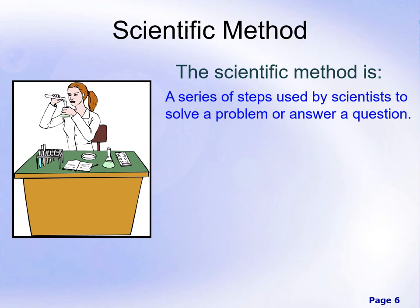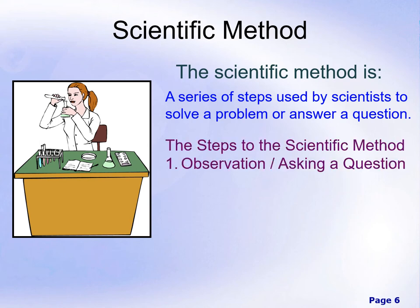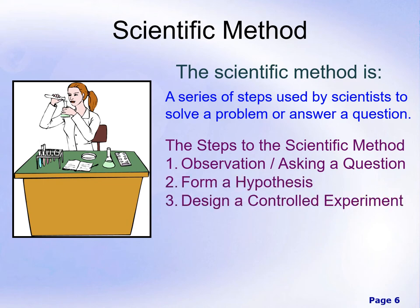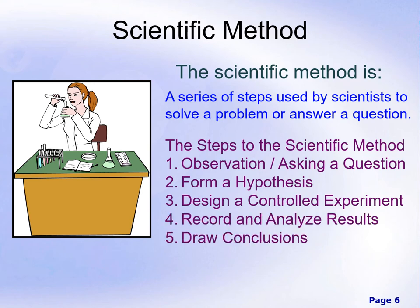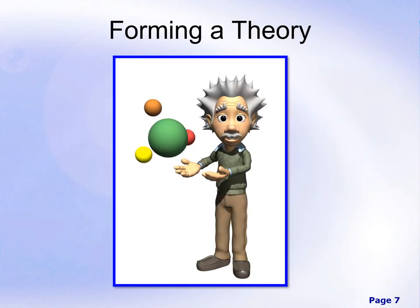The scientific method — which we've all learned about in grade school — is a series of steps used by scientists to solve a problem. It starts with an observation, asking a question, forming a hypothesis, designing a controlled experiment, recording and analyzing the results, and drawing conclusions. This leads to the formulation of a theory if your hypothesis holds true, and even a negative hypothesis can help formulate a theory by providing evidence that can be used to support it.